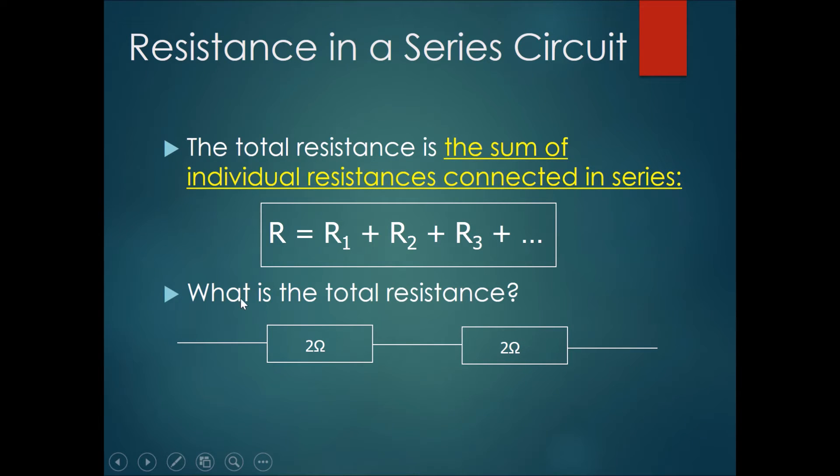So if I were to ask you what is the total resistance of these two that are in series, the total resistance would be R1 plus R2, also 2 ohms equals 2 plus 2, giving you a total of 4 ohms of resistance.